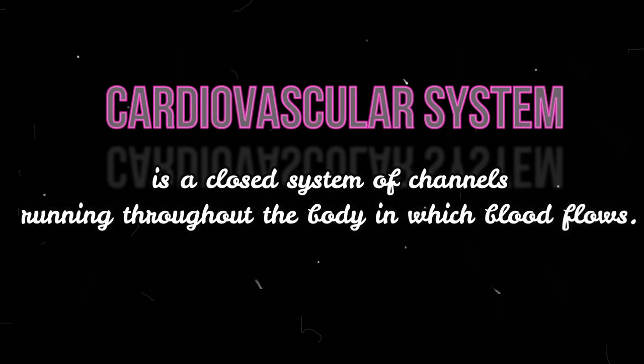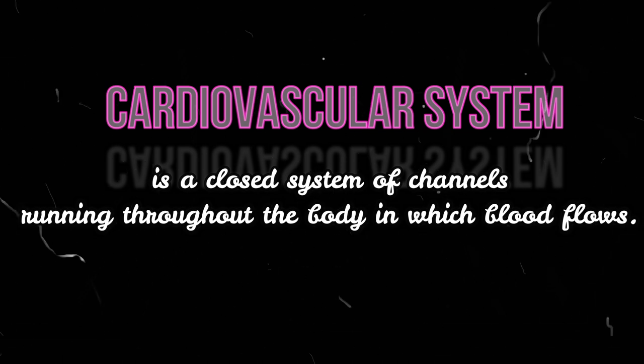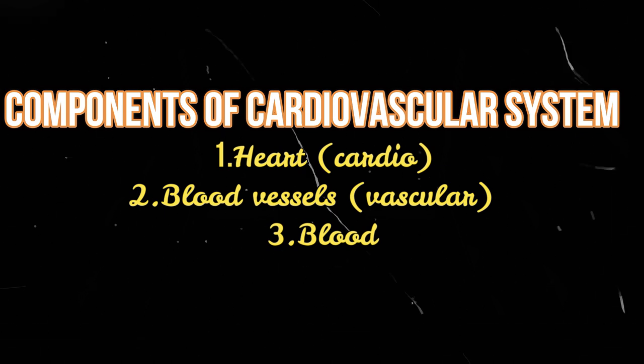When you hear about the cardiovascular system, what do you think it is? The cardiovascular system is a closed system in the body that deals with the transportation of blood. Blood is the major transport system in the body, so the cardiovascular system helps in transporting blood throughout the body. It has three main components: the heart, the vessels, and the blood.